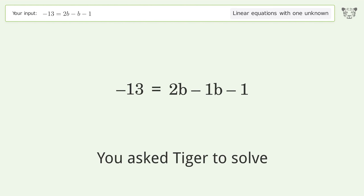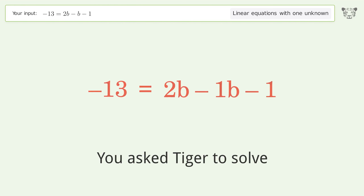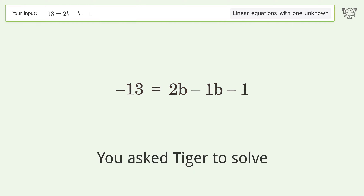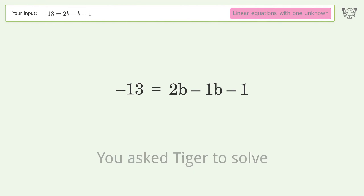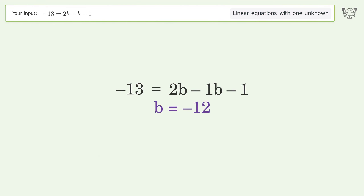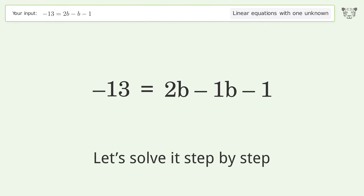Tiger is asked to solve a linear equation with one unknown. The final result is b equals negative 12. Let's solve it step by step.